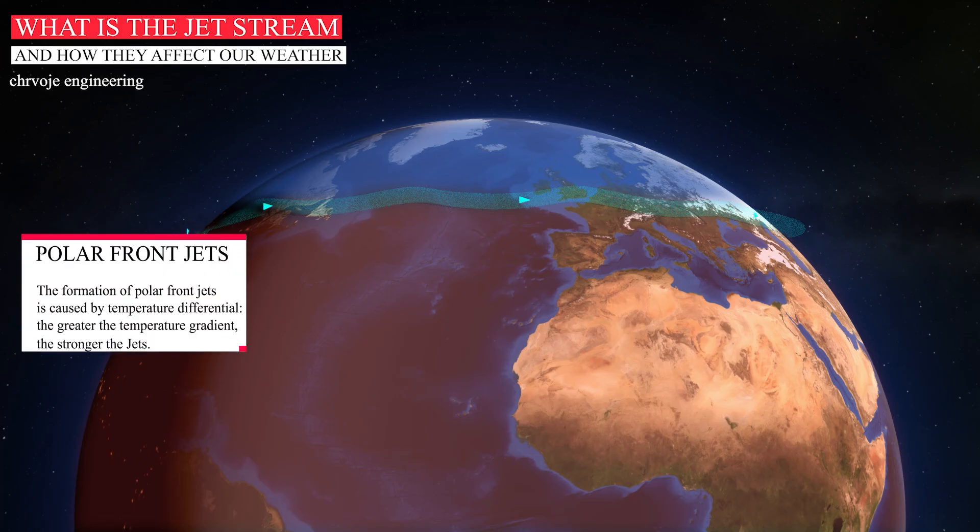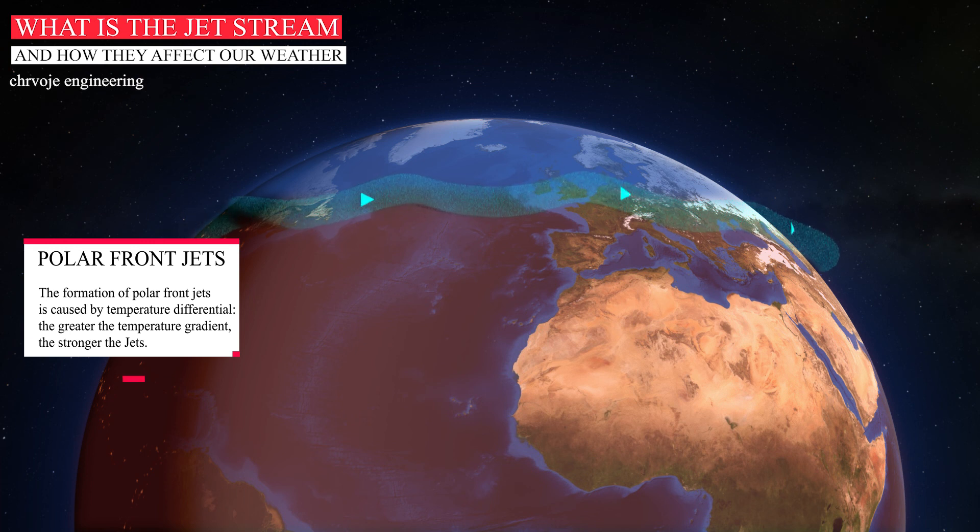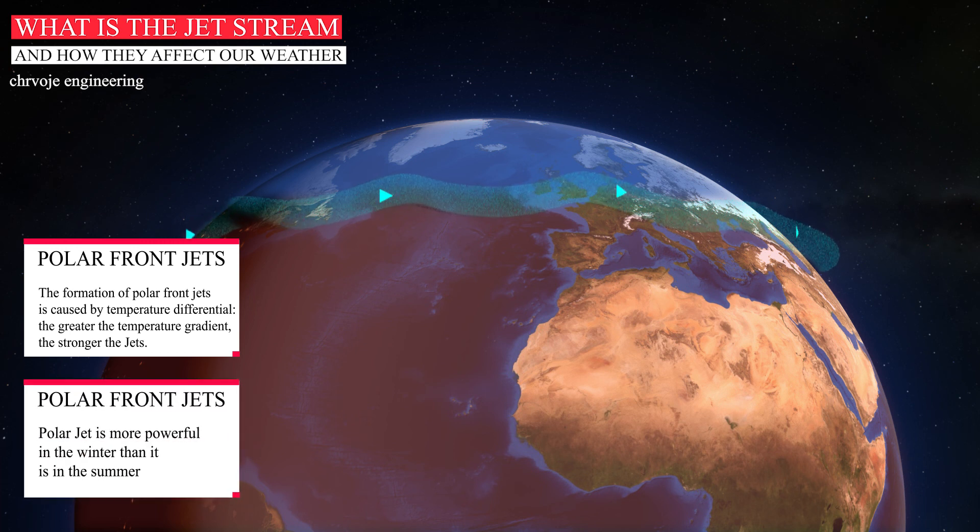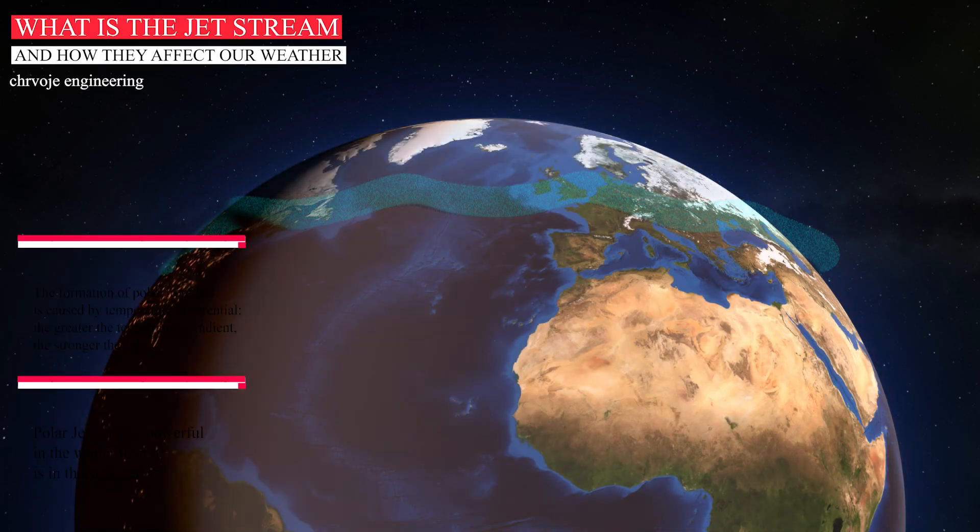The formation of the polar front jets is caused by temperature differential. The greater the temperature gradient, the stronger the jets. This indicates that the jet is more powerful in the winter than it is in the summer, as the Earth's poles cool during the winter months, increasing the temperature contrast.